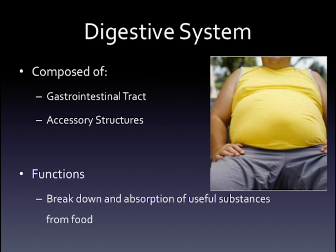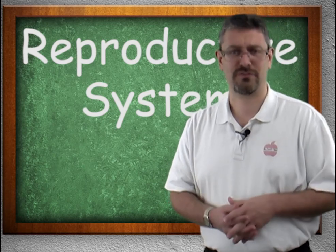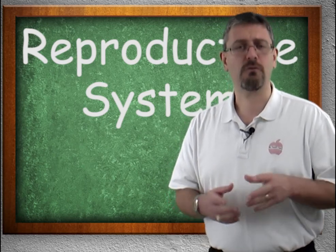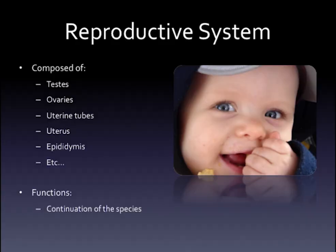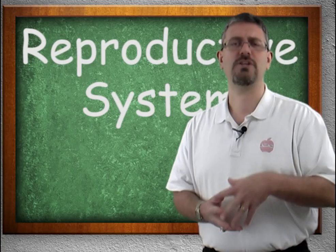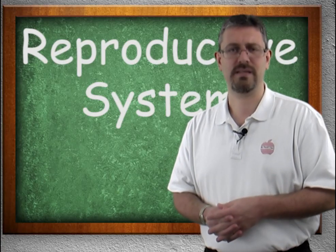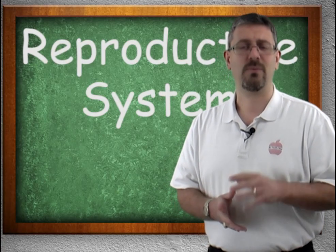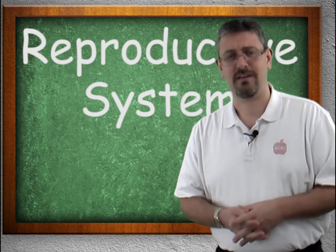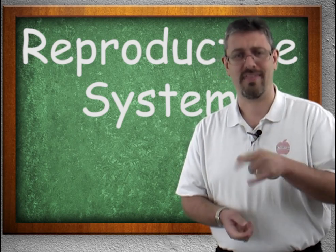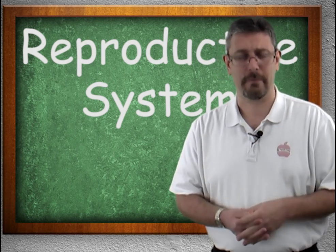Finally, we have the reproductive system. The reproductive system is composed of the testes, the ovaries, the uterine tubes, the uterus, and the epididymis. Its job is the continuation of the species. And by the way, that is a picture of my youngest son on that slide there.